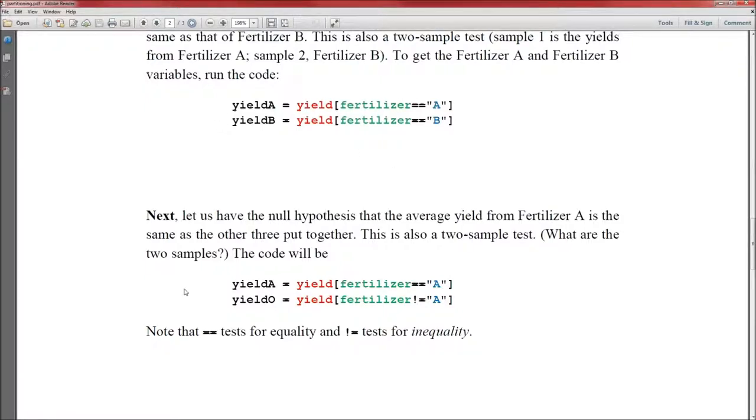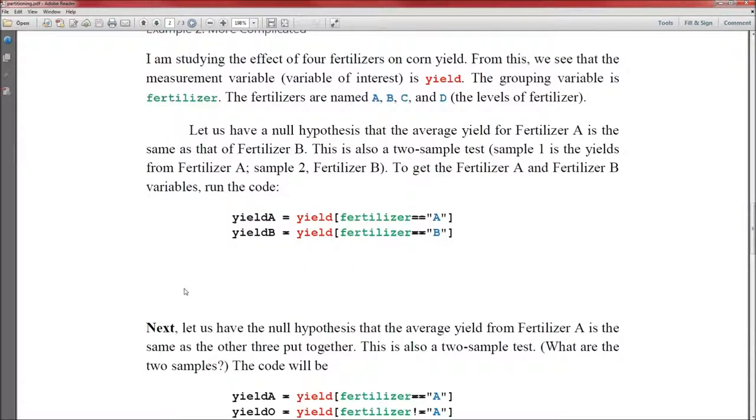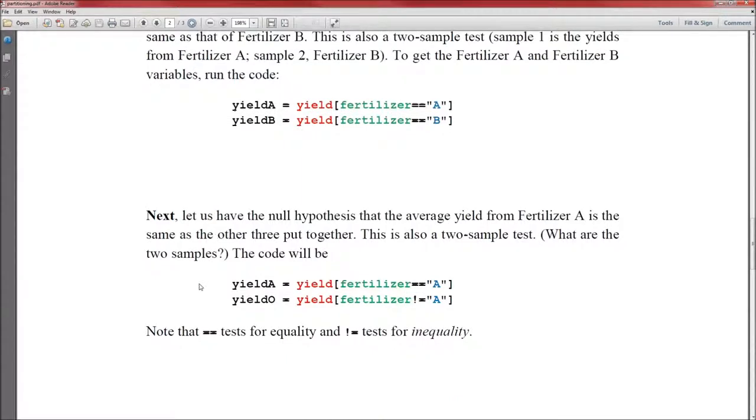Next, let's create a yieldA and compare it to all the others together. So what these two allowed us to do is compare the yield of group A, fertilizer A, to the yield of fertilizer B. What I may also need to do is compare yields of group A to the yield of all the others put together. So I'm going to create yieldA exactly the same as above, and we'll call it yieldO for other.